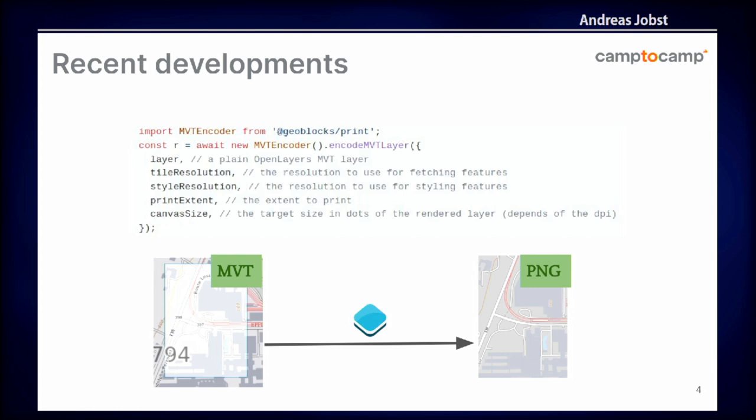It's called the MBT encoder. You define your OpenLayers layer and some other parameters. Then from the Mapbox vector tile — which is handled on the OpenLayers side — you get the PNG file generated by Geoblocks Print.